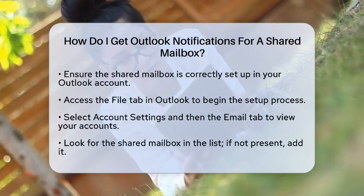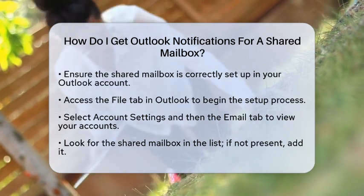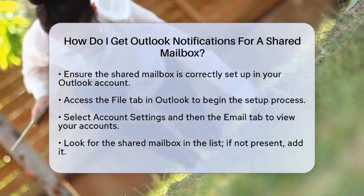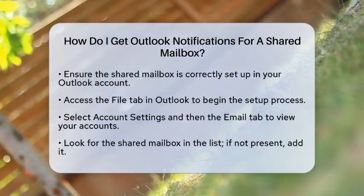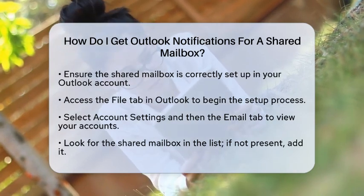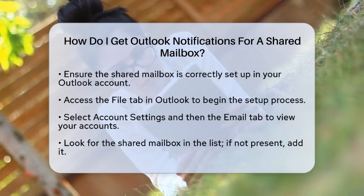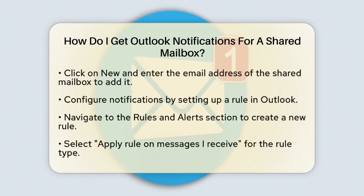First, make sure the shared mailbox is set up correctly in your Outlook account. This is essential for receiving notifications. To start, go to the File tab in Outlook. From there, select Account Settings and then choose the Email tab. Look for the shared mailbox in the list of accounts. If you do not see it, you will need to add it.